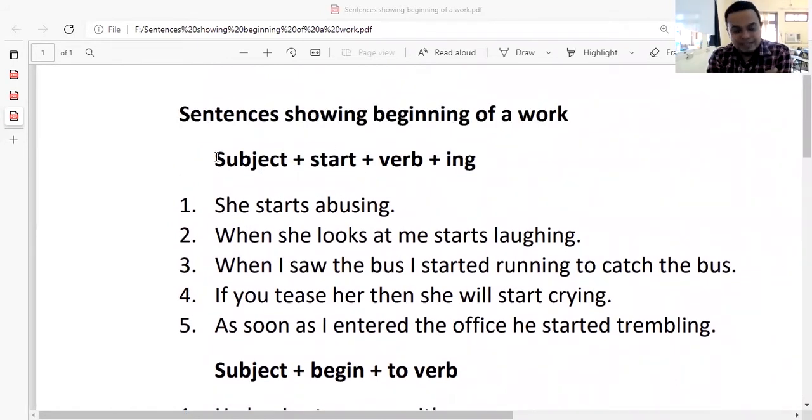Now here the tenses will be the same. This is the simple present tense, this is the simple future tense. In this sentence, start is the main word. He starts laughing. He started laughing. So this will be the construction. Tenses will be the same what you have learned previously. Now we will have a look at the examples given below.